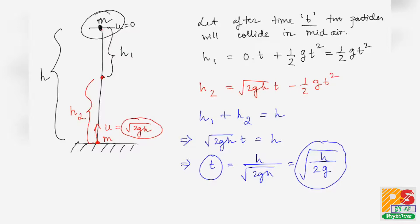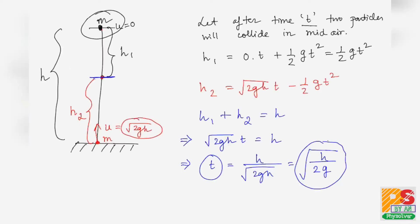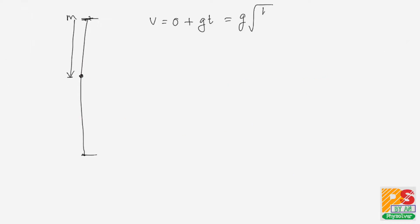Now we find the velocities of each particle just before the collision. For the first particle, v₁ = 0 + g·t = g·√(h/2g) = √(gh/2). This velocity is in the downward direction.